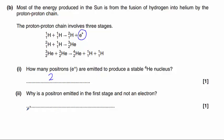Part two says, why is a positron emitted in the first stage and not an electron? A positron is the antimatter equivalent of an electron. It's exactly the same as an electron, but it has a positive charge. The way to think about this is that an electron is represented by the mass of zero with a charge of minus one. A positron is represented by the mass of zero with a charge of plus one.